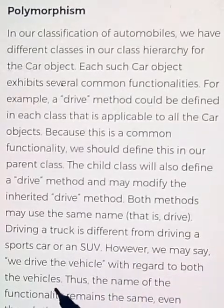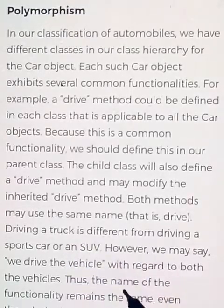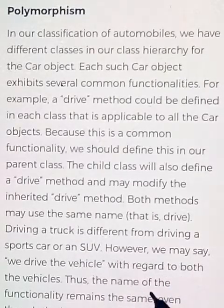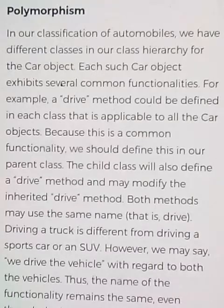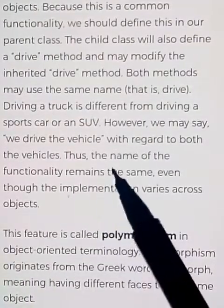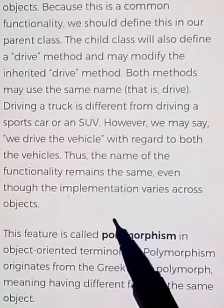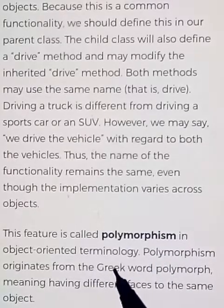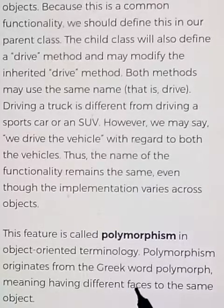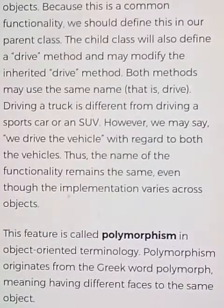We can say we drive the vehicle, whether it is a truck or a sports car. The name of the functionality remains the same even though the implementation varies across objects. This feature is called polymorphism. In object oriented terminology, polymorphism originates from the Greek word 'polymorph', meaning having different faces to the same object — one object having many faces is called polymorphism.